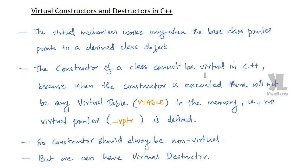The virtual mechanism works only when the base class pointer points to a derived class object. The constructor of a class cannot be virtual in C++, because when the constructor is executed, there will not be any virtual table.